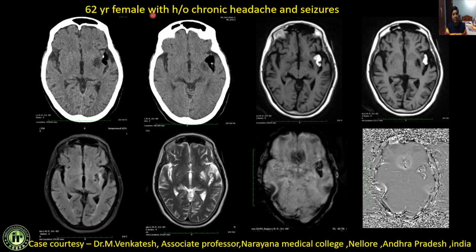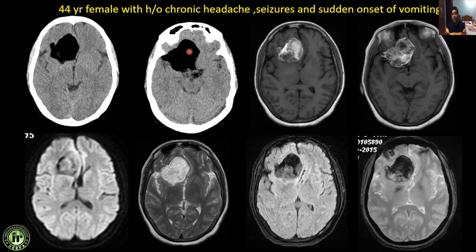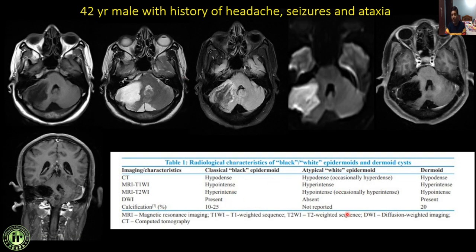Next: a 62-year female with chronic headache and seizures. There is a fat-containing lesion with eccentric calcification in the left temporal lobe and along the left Sylvian fissure. There is adjacent gliosis. The lesion is predominantly hyperintense on T1, suppressed on FLAIR, heterogeneously hyperintense on T2, and showing blooming on GRE — because fat can show blooming on GRE. This is a classical case of intracranial dermoid cyst. The calcification, or other contents such as teeth or hair, differentiates a dermoid cyst from an epidermoid. This chart summarizes the differentiation between black epidermoid, white epidermoid, and dermoid cyst.